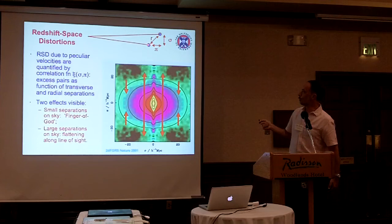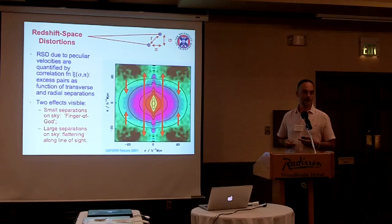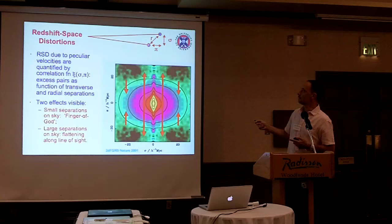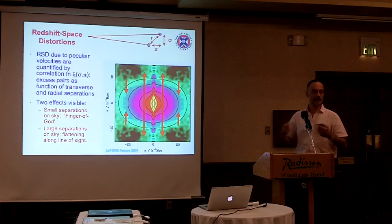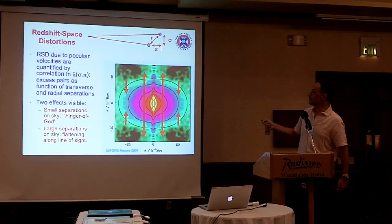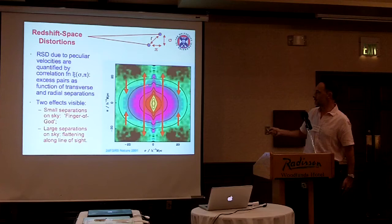So what we measure from these surveys — the way we quantify the fact that the universe is non-uniform — is a correlation function. What this means is you sit here and say, in a uniform universe I should have so many neighbours within a certain distance. If I have more neighbours than that, that means things are clustering. So this number quantifies the excess number of pairs relative to random. And we can measure it as a function of the transverse and the radial separation. If there were no peculiar velocities, the contours of that excess probability would be circular.